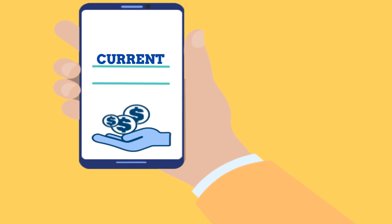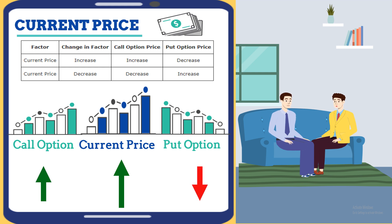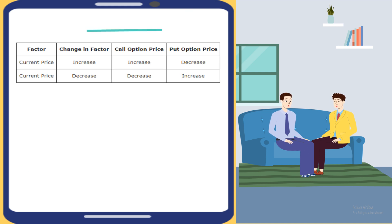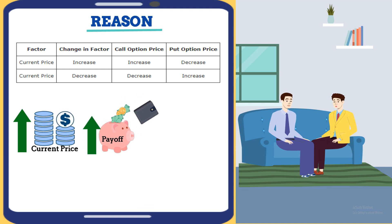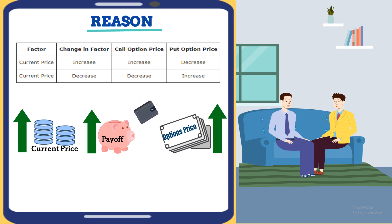Let's begin with current price. When the current price of the underlying asset increases, the price of call options increases and the price of put options decreases. Conversely, when the current price decreases, the price of call options decreases and the price of put options increases. The reason is that when the current price of the underlying asset increases, the payoff for call option holders increases, and the price of the option must increase to offset this higher payoff. That makes sense.